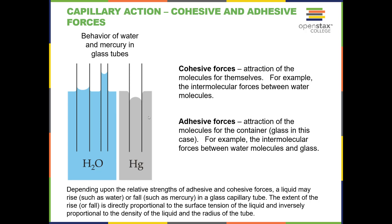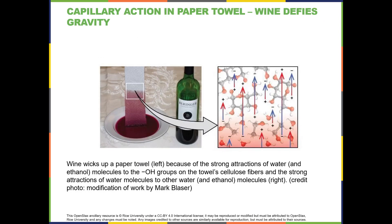Capillary action is basically a result of surface tension. Another example is wine in a paper towel: cellulose is very polar, so the polar molecules in wine — mostly water and ethanol — are attracted to the cellulose and move up through it. In the lab, we use this same phenomenon in a technique called chromatography, where a liquid moves through a cellulose stationary phase.